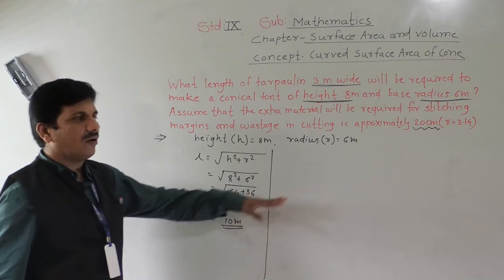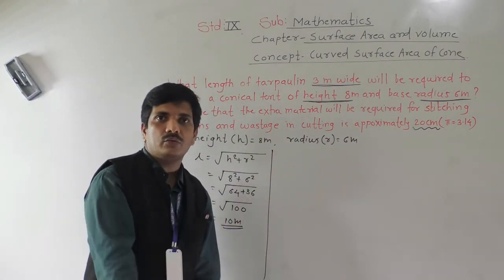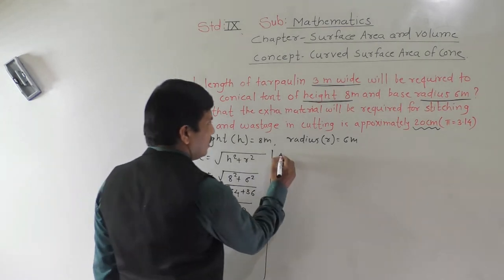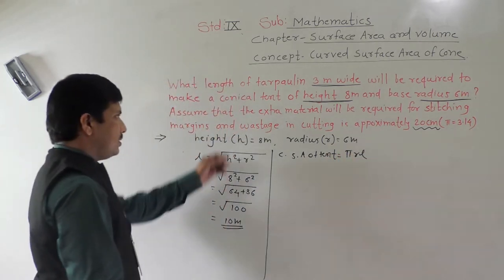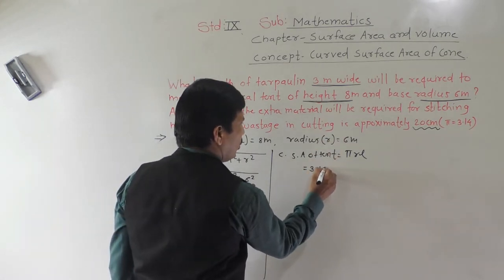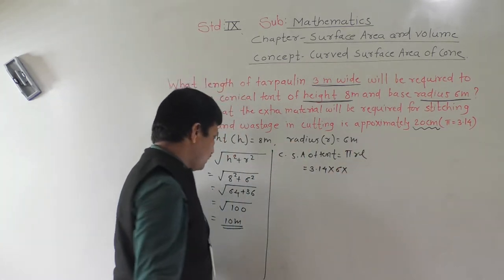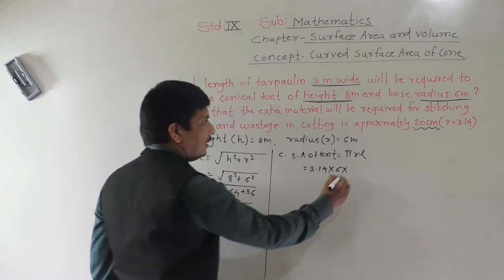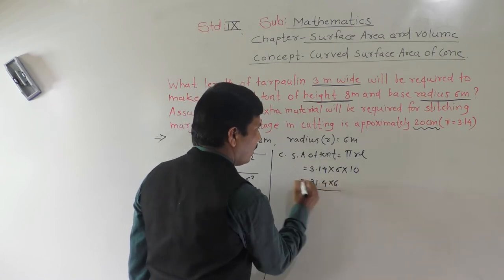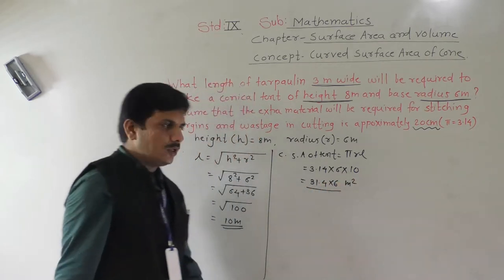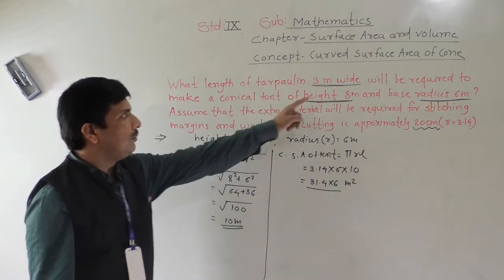Now we have slant height and radius, so we can find curved surface area easily, which tells us how much material is required. CSA of cone equals pi × r × l. Pi is 3.14, radius is 6 meters, slant height is 10 meters. So that gives 3.14 × 6 × 10 = 31.4 × 6. Width is given as 3 meters and we have to find length.